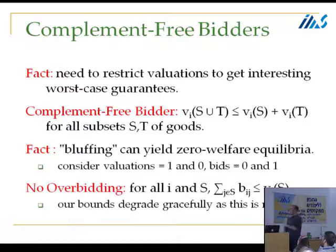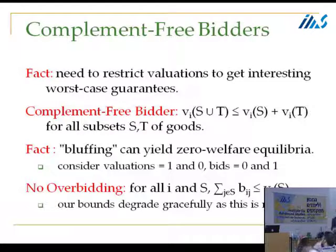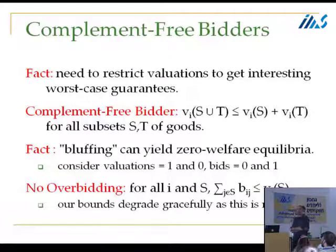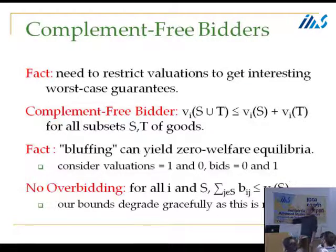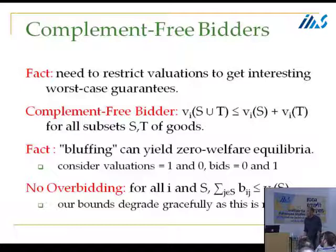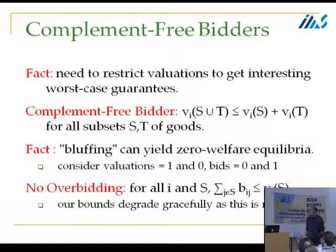The second assumption is motivated by a severe version of the bad example: even with one good and two bidders in a welfare-maximizing Vickrey auction, there's a full information Nash equilibrium with zero welfare — if valuations are one and zero but bidders bid zero and one respectively, this is a pure strategy Nash equilibrium with zero welfare. So we can't look at all equilibria; we have to restrict to ones without this bluffing problem.